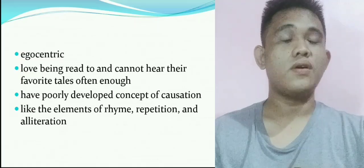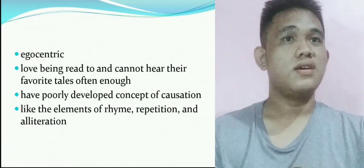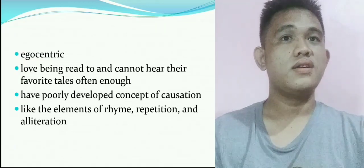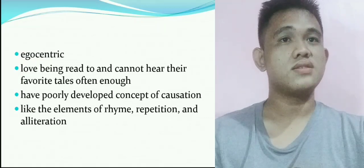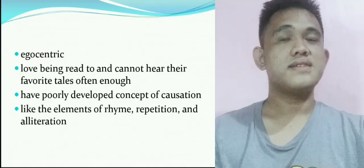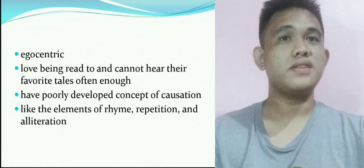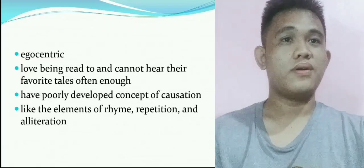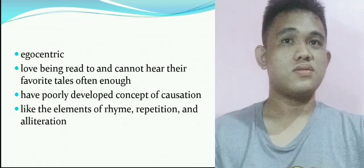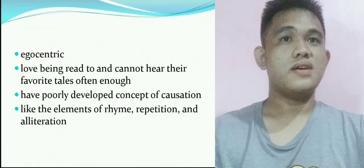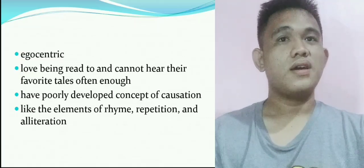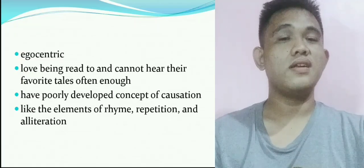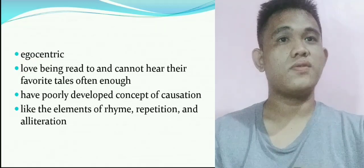Next is having a poorly developed concept of causation. Children are not really good at thinking about their actions — they just do what they want without thinking about the consequences, because they still don't understand things in our world. That is why school guides and teaches them good lessons. Children also like the elements of rhyme, repetition, and alliteration, such as poems or rhyming storybooks. Rhyming helps babies and children learn about words, sounds, and language formation. Rhyme and repetition help children develop early literacy skills, and are important for early brain development as they create secure foundations for early learning.